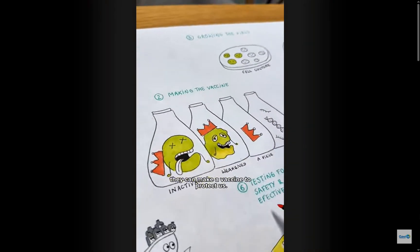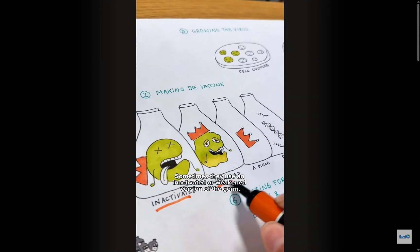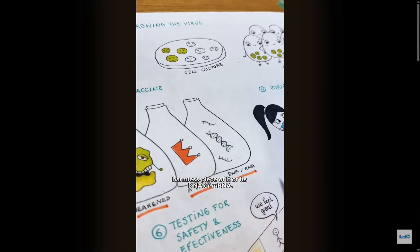Once scientists know how the germ works, they can make a vaccine to protect us. There are different ways to do this. Sometimes they use an inactivated or weakened version of the germ. Other times, they just use a small harmless piece of it or its DNA or mRNA.